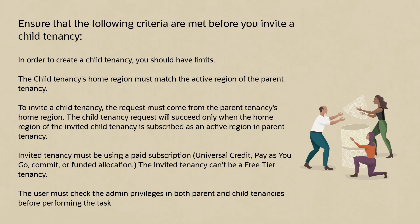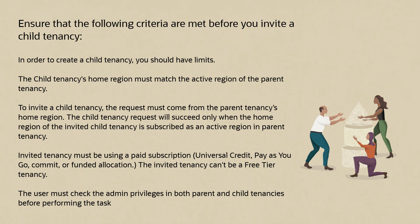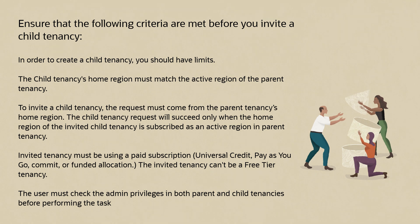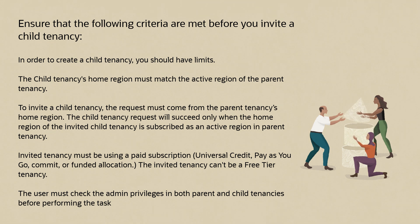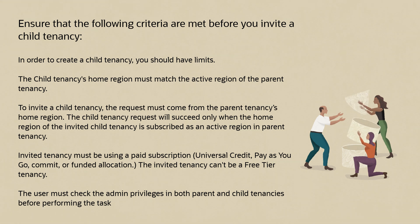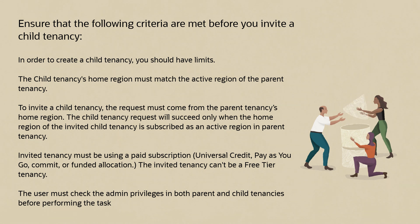Ensure that the following criteria are met before you invite a child tenancy. You should have limits. The child tenancy's home region must match the active region of the parent tenancy. The request must come from the parent tenancy's home region, and the child tenancy request will succeed only when the home region of the invited child tenancy is subscribed as an active region in the parent tenancy. The invited tenancy must be using a paid subscription, universal credit, pay-as-you-go, commit, or funded allocation. The invited tenancy cannot be a free tier tenancy.